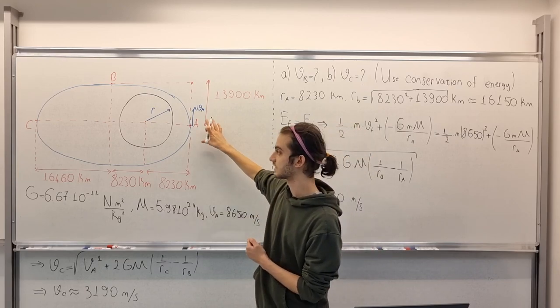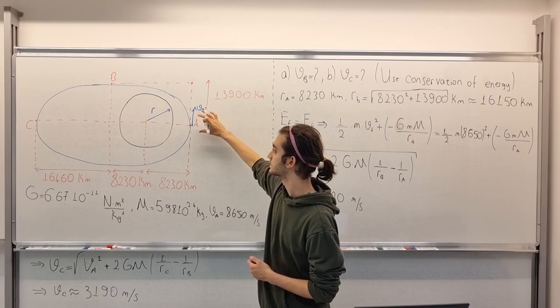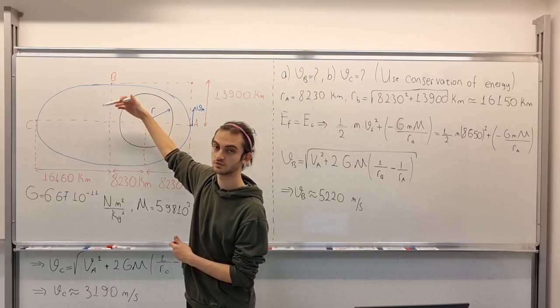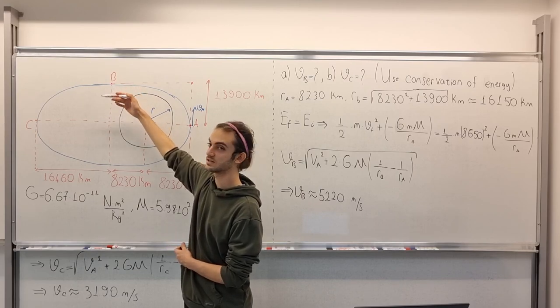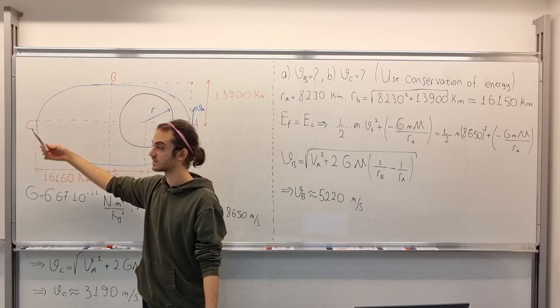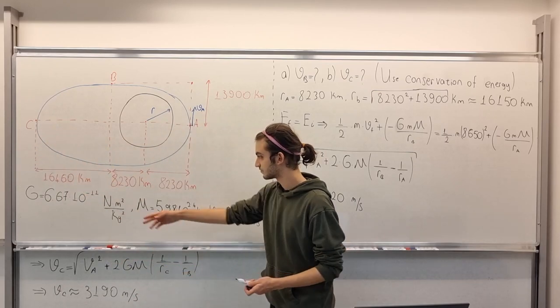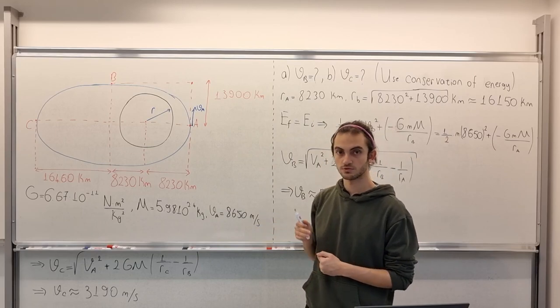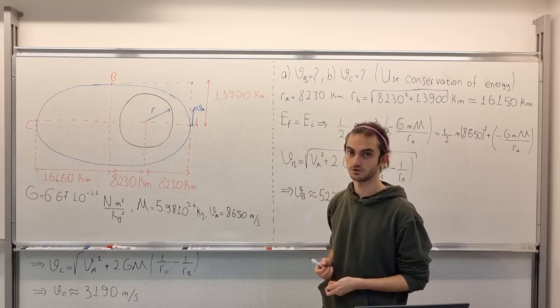we need to find, we are given the speed of the satellite at point A and we need to find the speed of satellite at point B. In option B, we need to find the speed of satellite at point C. These are the given values, the constants. And if you want to solve the question by yourself, you may stop the video now. I will wait for you a few seconds.